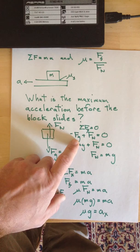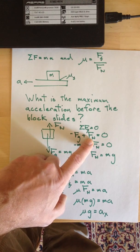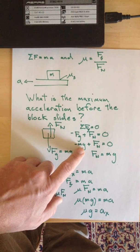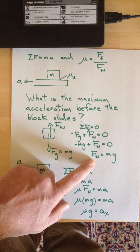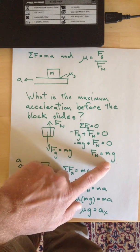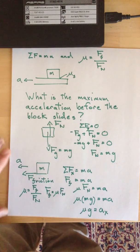Weight pulls down. That's the negative sign from weight. Normal pushes up. Negative mg plus the normal force equals zero, and all you do is add the weight to both sides. So the normal force is the weight. It's just opposite in direction.